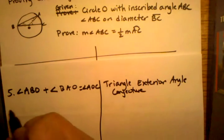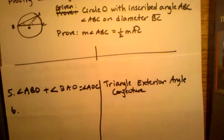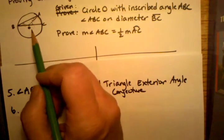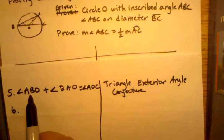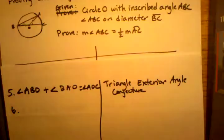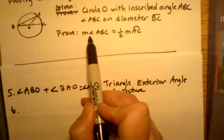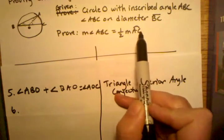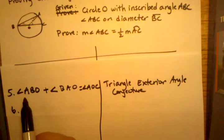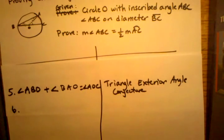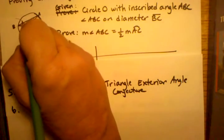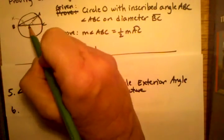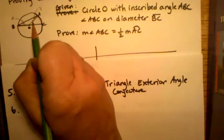So now I've proven that this angle plus that angle equals this angle. I can do some algebra to get closer to an equation like: measurement of angle ABC equals half of measurement of arc AC. To make that easier, I'm going to designate variables — I'll call angle ABO X, angle BAO Y, and angle AOC Z.